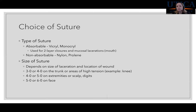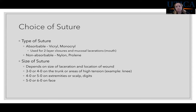For suture size selection, it depends on where the wound is located and whether it's over a high-tension area. For the trunk or high-tension areas like over a knee, use a larger suture: 3-0 or 4-0. For extremities, scalp, or digits: 4-0 or 5-0. For the face: 5-0 or 6-0. You'll probably use 4-0 or 5-0 about 90% of the time.